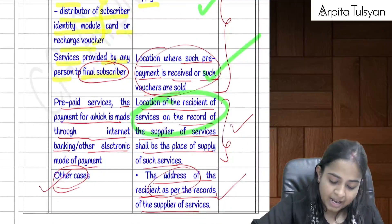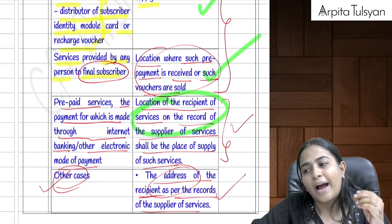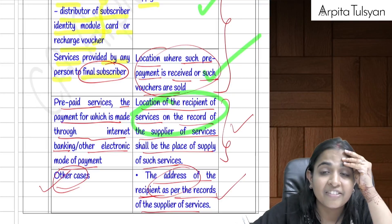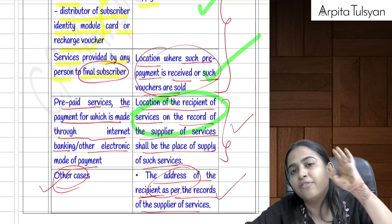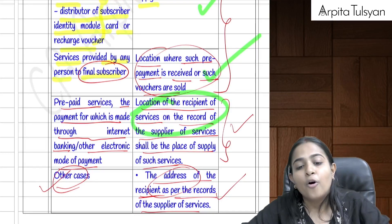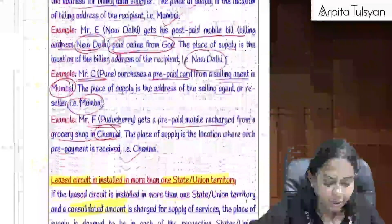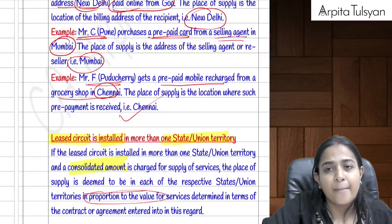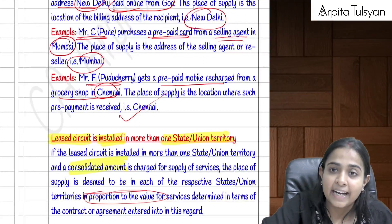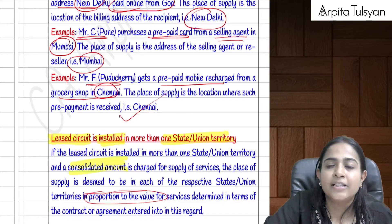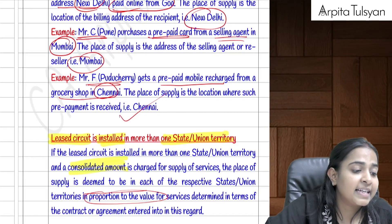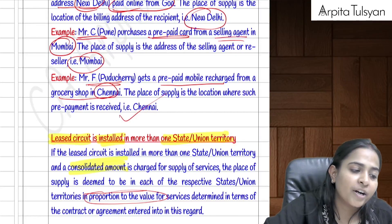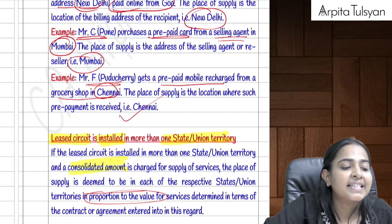For prepaid vouchers sold by any person to the final subscriber, the place of supply is where the payment is received. If recharge is done online via electronic mode, the location of the recipient (as available) is the place of supply. For leased circuits installed in more than one state, the value is divided as per the contract or, if nothing is specified, in the ratio of number of circuit points in each state or union territory.